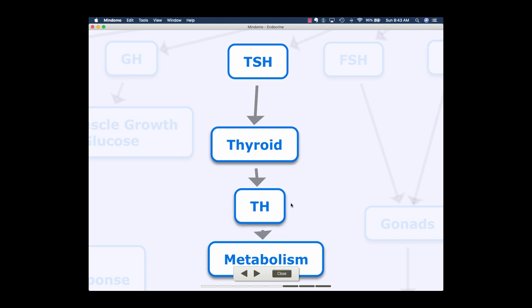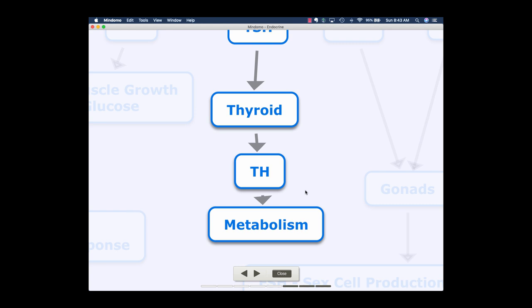So our thyroid hormone, released from the thyroid gland, is going to regulate our metabolism. Someone who has hyperthyroidism — their metabolism is going to run fast, and they're going to have a hard time maintaining weight, so they're going to lose weight unintentionally. Someone who has hypothyroidism — so their thyroid hormone levels are lower than normal — are going to gain weight unintentionally and have a hard time losing it, simply because their metabolism is not being regulated appropriately.